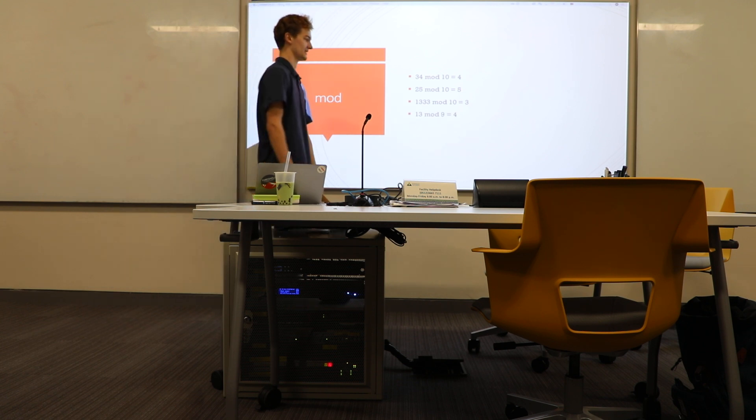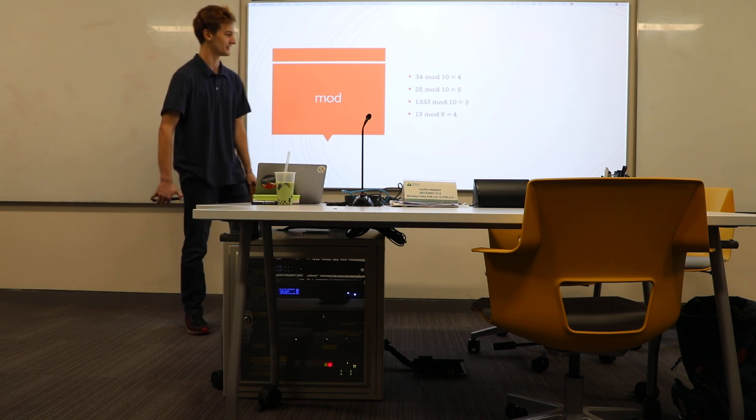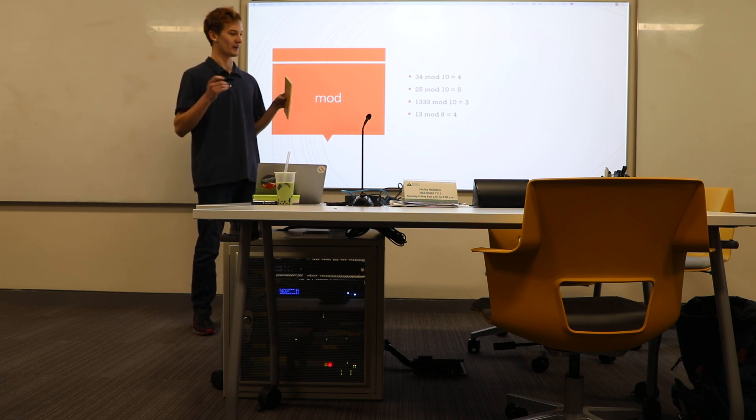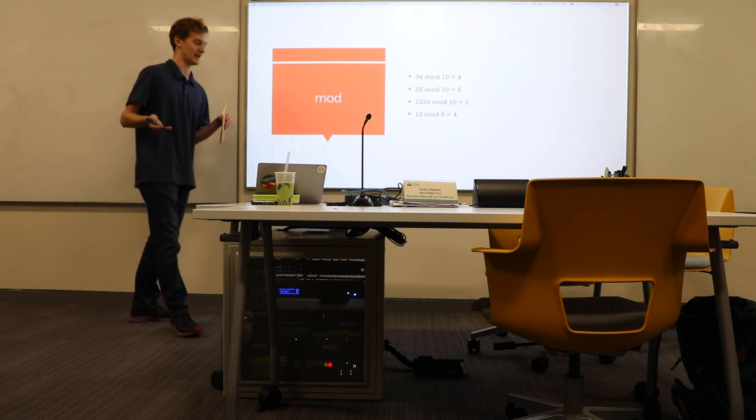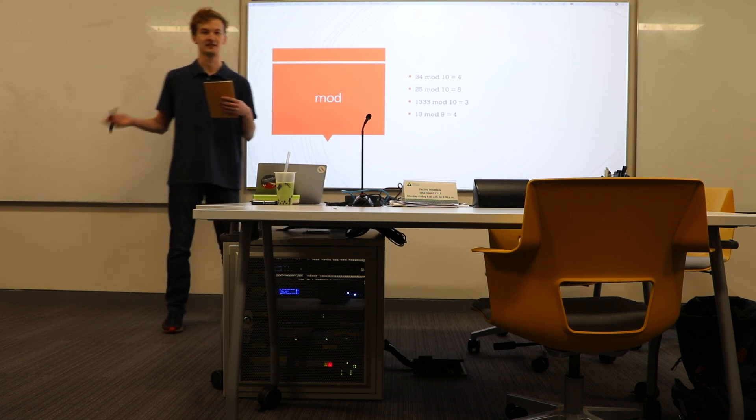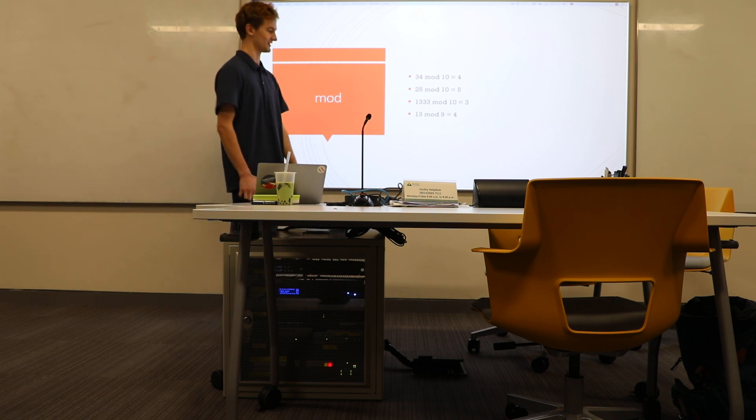But if you do something like 13 mod 9, it doesn't give you the last digit, it gives you 4. So basically what it's doing is not just looking at the digits, but actually you're dividing by that number, and whatever the remainder is, that's what you're going to output as the answer. So 13 divided by 9 is equal to 9 times 1 plus 4.